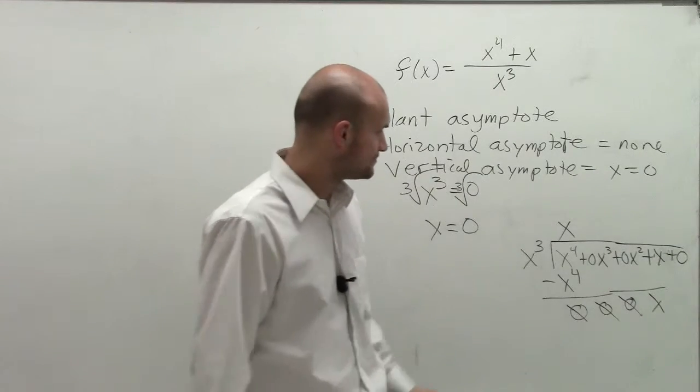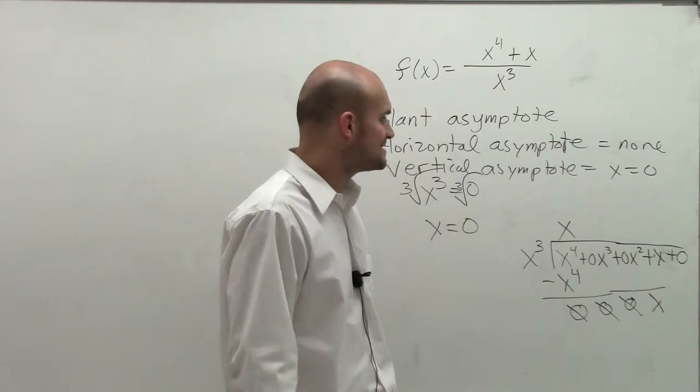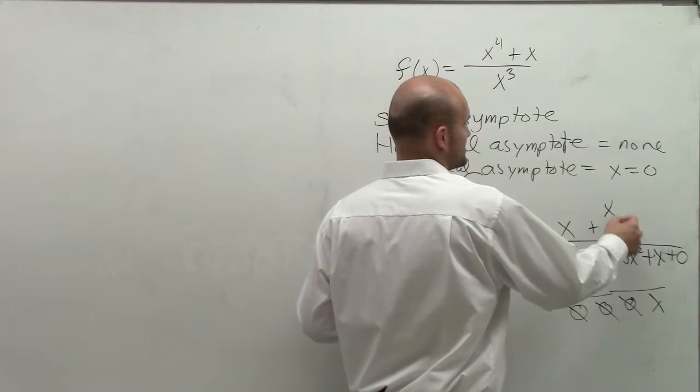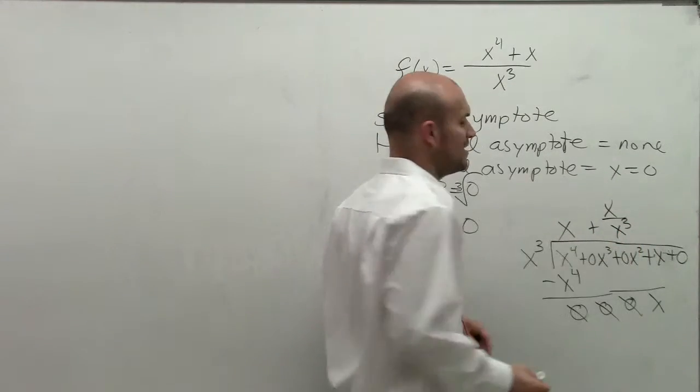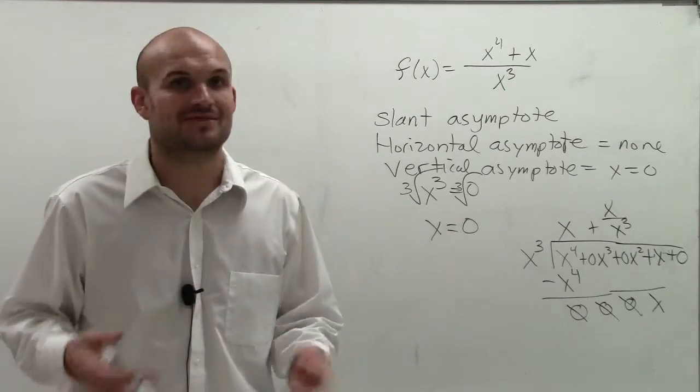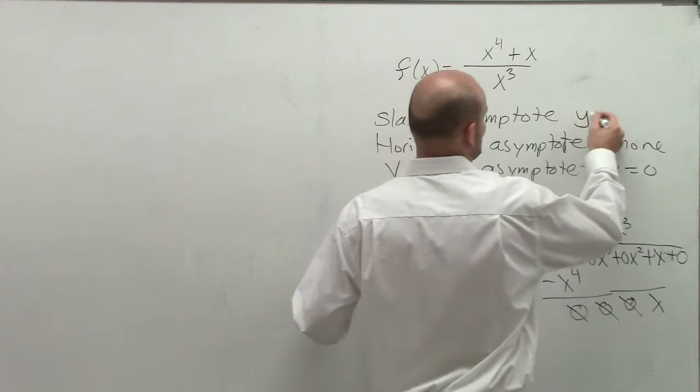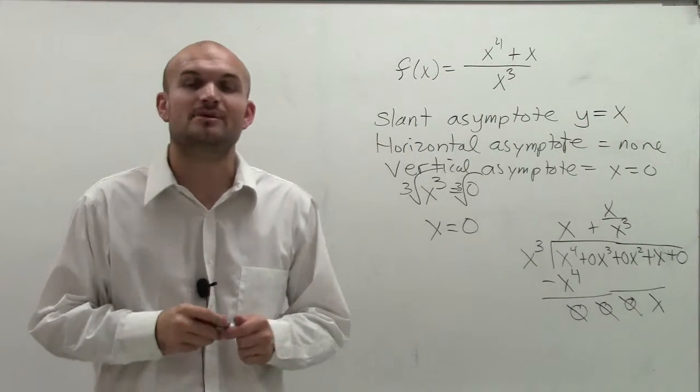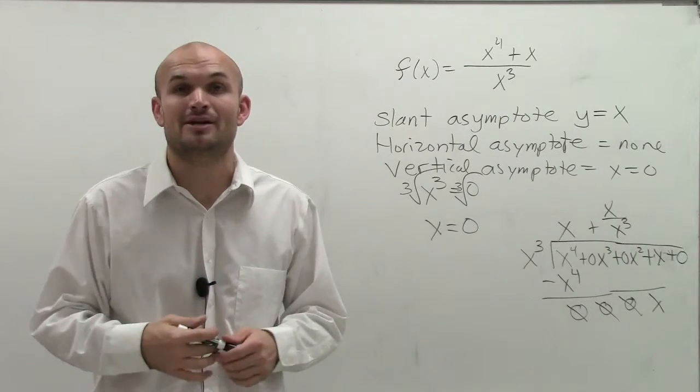So since x cubed does not go into x, what I therefore have is my denominator, which is x over x cubed. However, for our slant asymptote, we are not concerned about the remainder at all. So my slant asymptote is going to be the line of y equals x, where x is just going to be my divisor minus my remainder part.